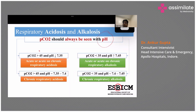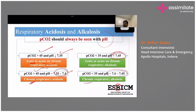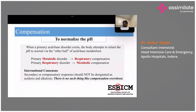If PCO2 is high and pH is low, it is either acute or acute-on-chronic respiratory acidosis. If PCO2 is high and pH is between 7.35 to 7.4, it is a chronic condition — pH normalizes in chronic disorders. If pH is high and PCO2 is low, it's acute respiratory alkalosis. If pH is normal with PCO2 changes, it's either chronic respiratory acidosis or chronic respiratory alkalosis.